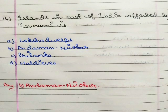Next question: the islands on the east coast of India affected by the tsunami are option A Lakshadweep, option B Andaman and Nicobar, option C Sri Lanka, option D Maldives. The correct answer is option B Andaman and Nicobar.